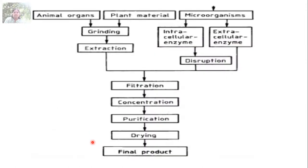This flowchart explains the steps of protein isolation and purification — that is, enzyme isolation and purification — because most enzymes are proteinaceous in nature. The first step is selection of the source. You have to select a rich source of the enzyme, which may be present in an animal organ, plant material, or in microorganisms.